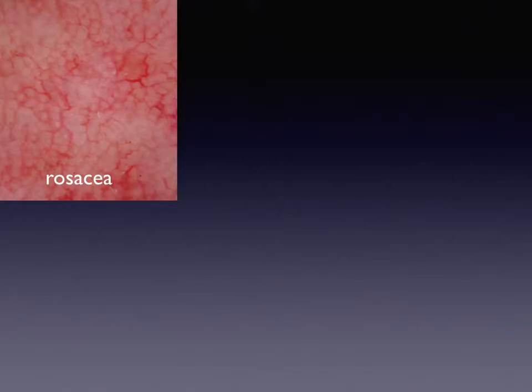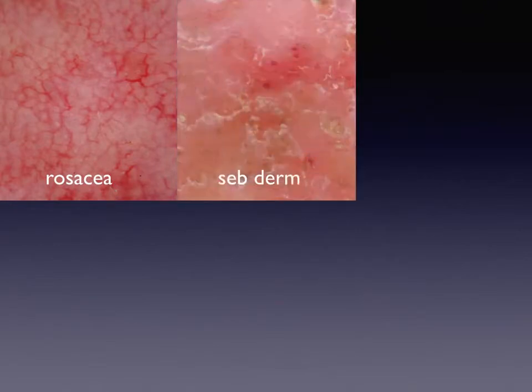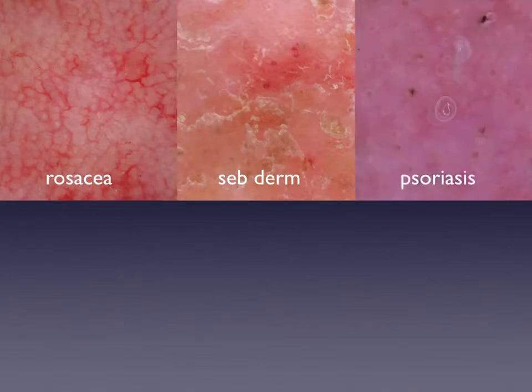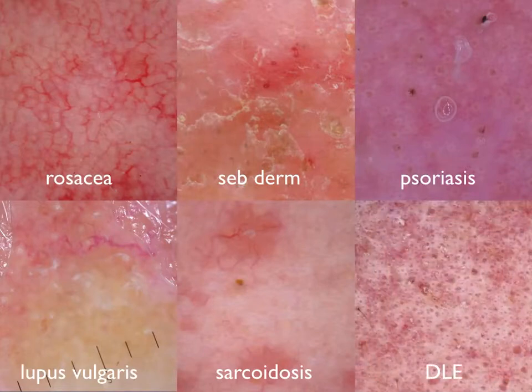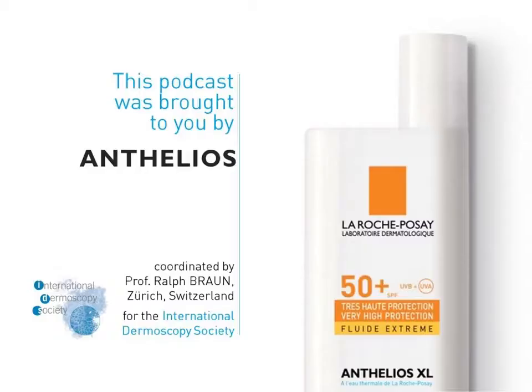In conclusion, dermoscopy facilitates the recognition of facial inflammatory skin diseases by revealing characteristic findings for each disease: the polygonal vessels of rosacea; dotted vessels plus yellow scales in seborrheic dermatitis; regularly distributed dotted vessels in psoriatic facial lesions; yellow patches and linear vessels in granulomatous skin diseases; and follicular abnormalities in early lesions of discoid lupus erythematosus.